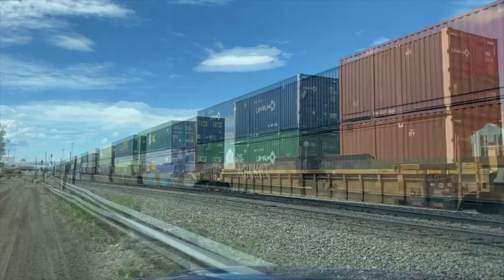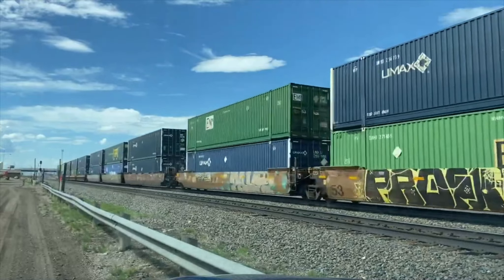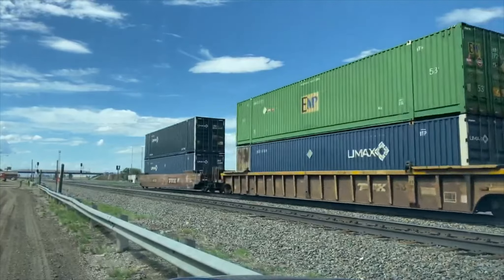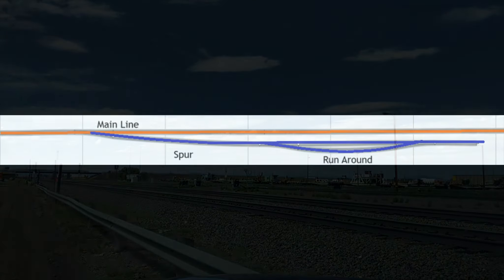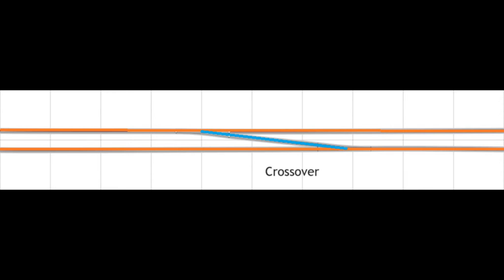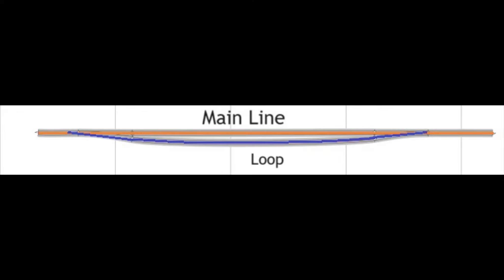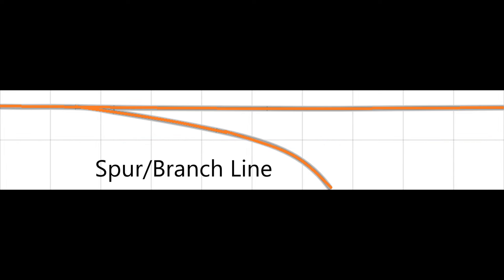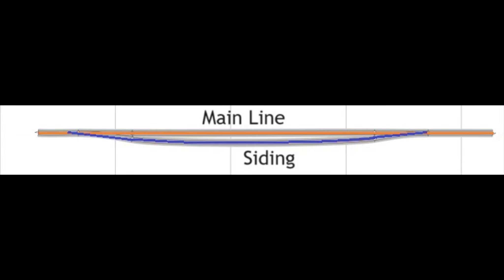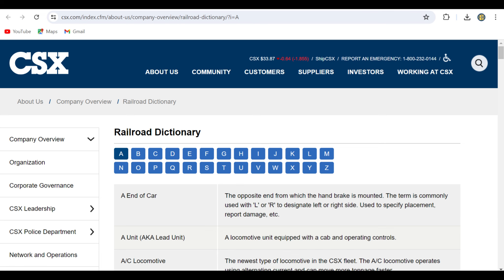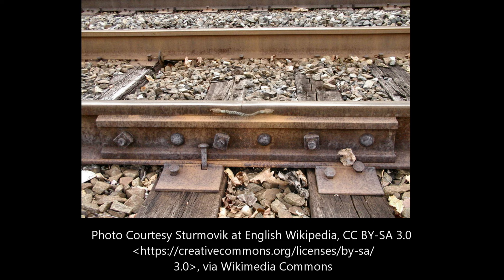Hello. Since you seemed to enjoy our last discussion of model train layout considerations, I thought I would continue. This time we will discuss various elements that can add interest and variety to a layout. Some of these are primarily found in North American settings, and some have their roots in British Rail. This is a partial list — there are other subsets, and the ones highlighted here all came from the online CSX company dictionary. I will display track plans for some, but not all of these descriptions.